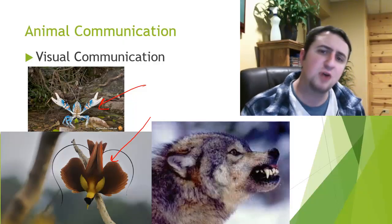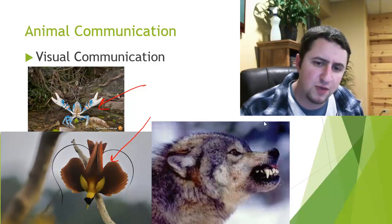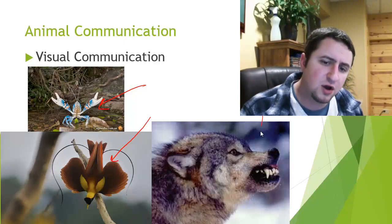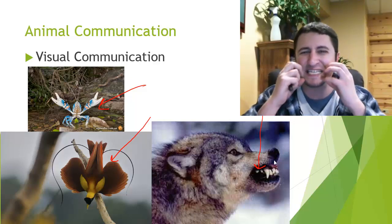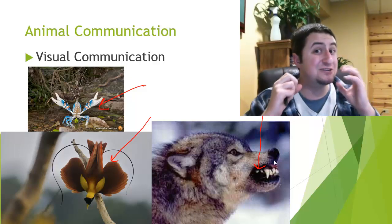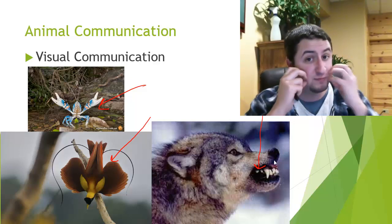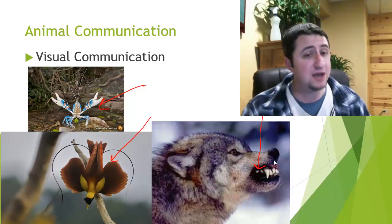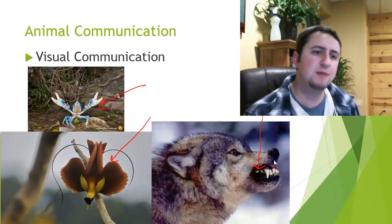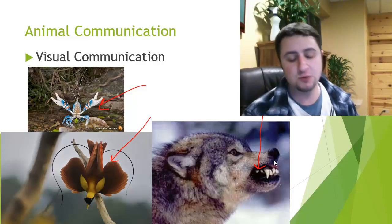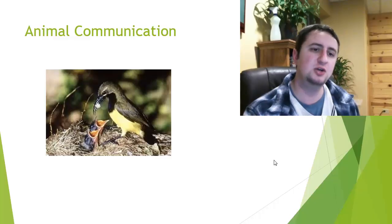If you have a dog at home, you may have seen your dog do this — where they kind of show their teeth like, hey, don't mess with me, I have big teeth and I'm going to bite you. So those are all really good examples of visual communication.